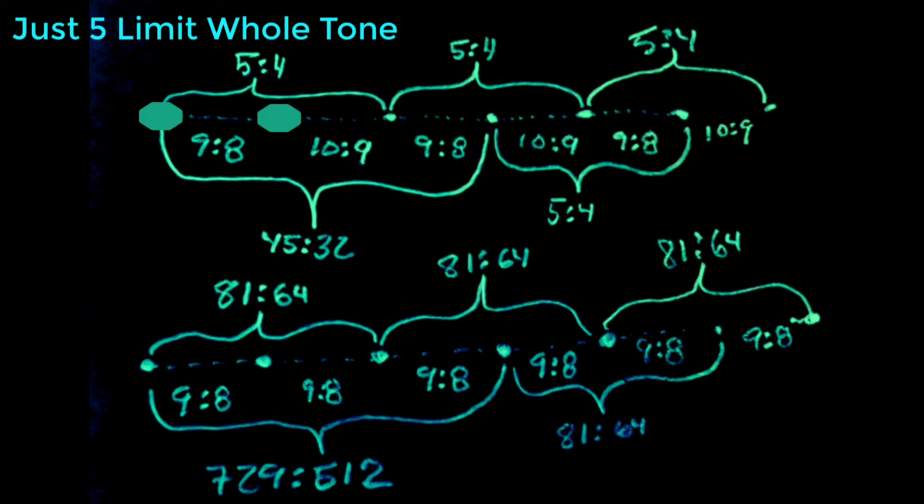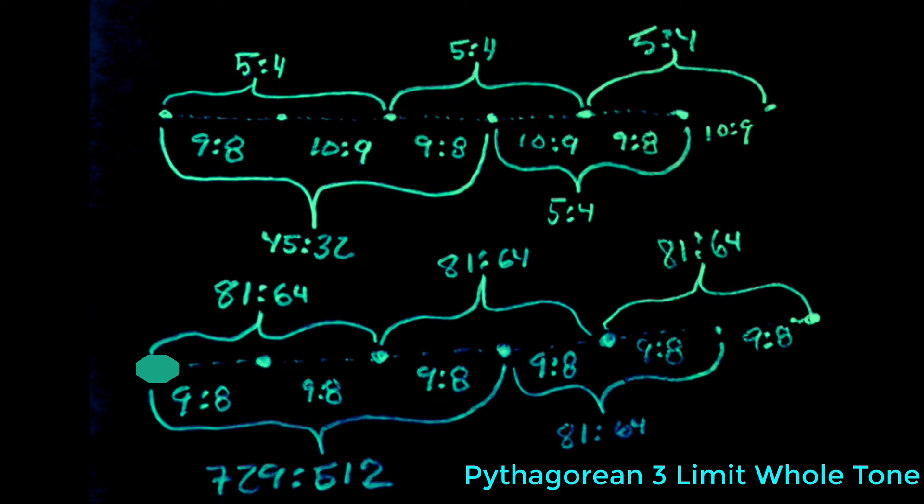Based on these two patterns, we can create a 5 limit whole tone scale, as well as a Pythagorean whole tone scale. Very bright and kind of sounds like it's spiraling off drift of the Pythagorean circle of fifths.